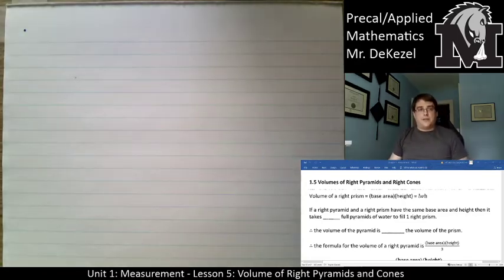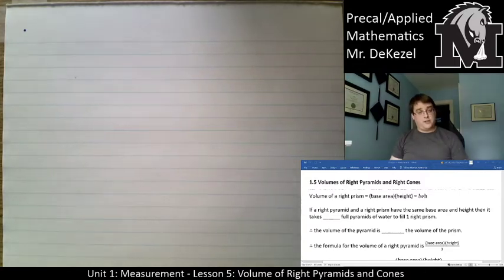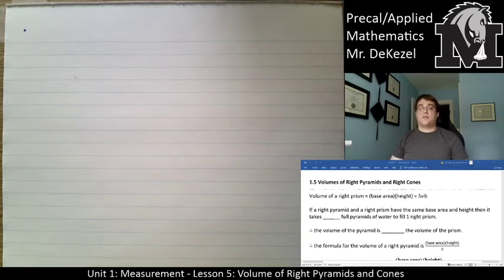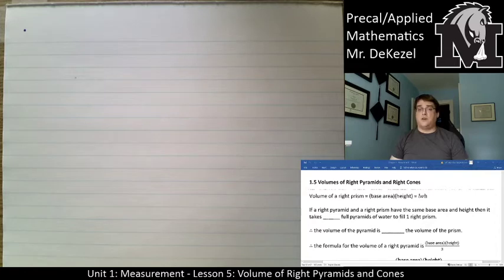Hello everyone, welcome back to another lecture. This is lesson five of unit one, about the volume of right pyramids and cones. We talked about the surface area of each, but now we're going to talk about the volume. The first step is to derive the equation, which requires the volume of a cube and the volume of a cylinder.